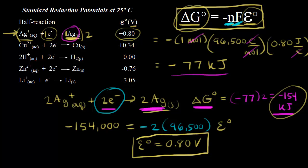It's the same voltage to form two moles of silver as it was to form one mole of silver. Voltage is an intensive property — it doesn't matter how many moles of silver you're forming or how many moles of electrons you're using, the voltage stays the same. This is important to remember when working with standard reduction potentials: if you multiply a half reaction by two, you do not multiply the voltage by two, because voltage is an intensive property.